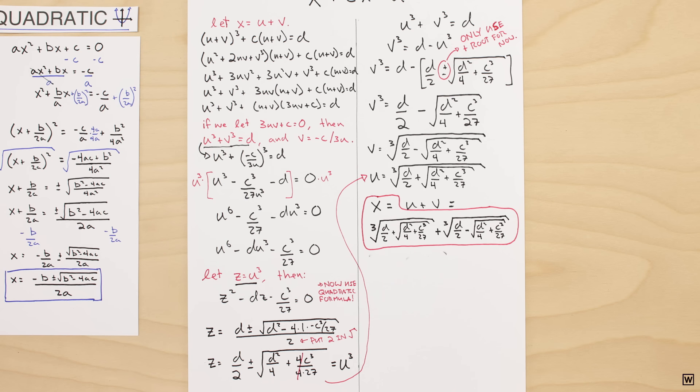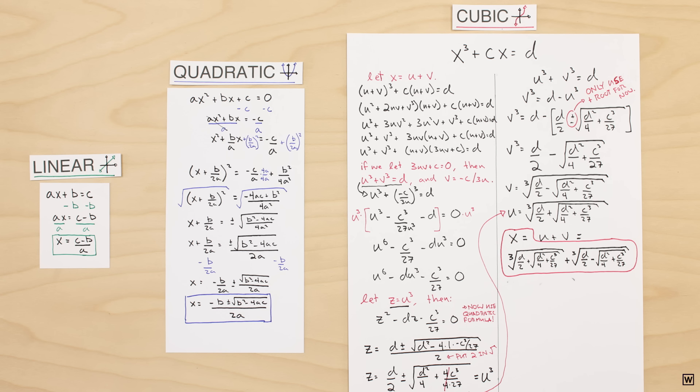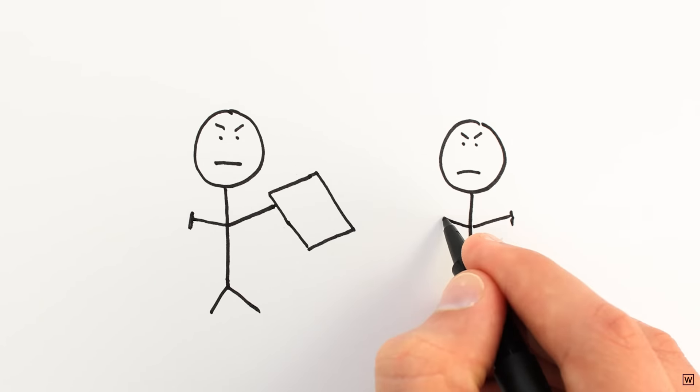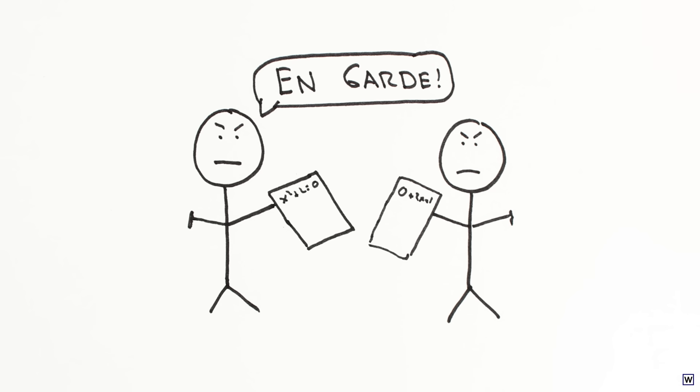Just like the quadratic formula, Del Ferro's new formula allowed him to find the solution to cubic equations by simply plugging in values. Now, for some reason, the way mathematicians earned money in the 16th century was through challenging other mathematicians to what were basically math duels, so Del Ferro kept his new formula a secret to use in his next duel.